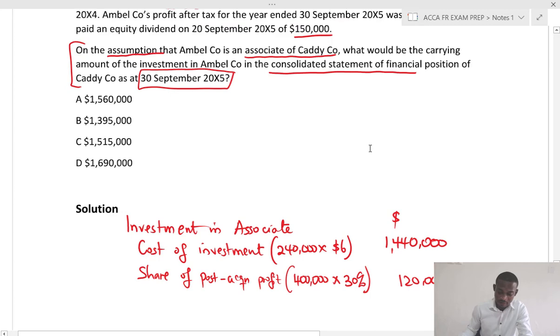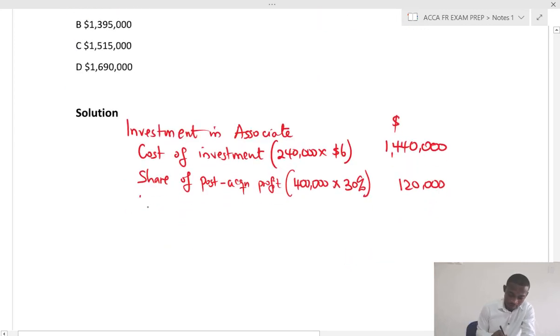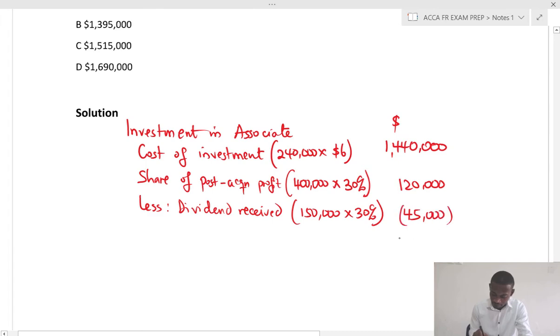And because they paid a dividend of $150,000, we have to less the dividend received. The dividend received is $150,000 times 30%. So 150,000 times 0.3, that will give us $45,000. So let's see the adjustment. I have $1,440,000 plus $120,000 minus $45,000, and this gives us $1,515,000.